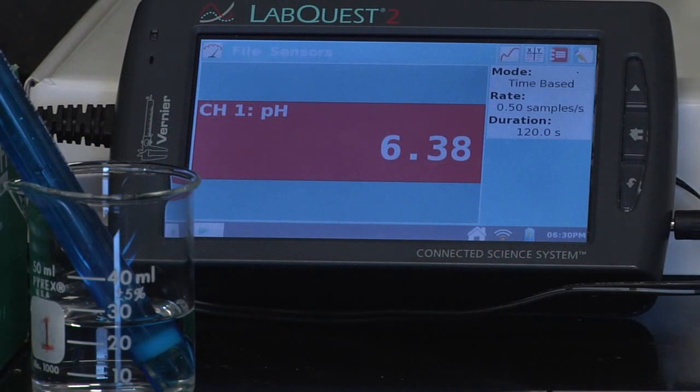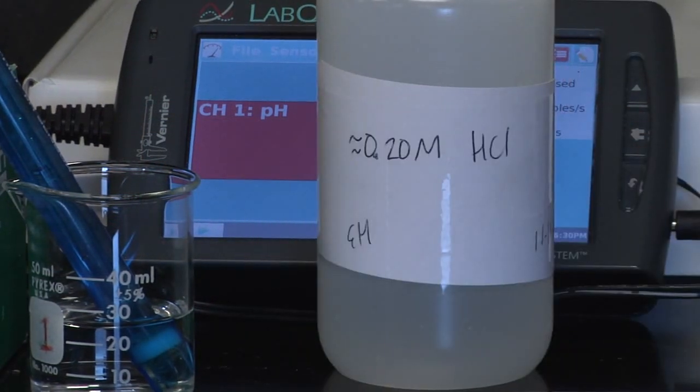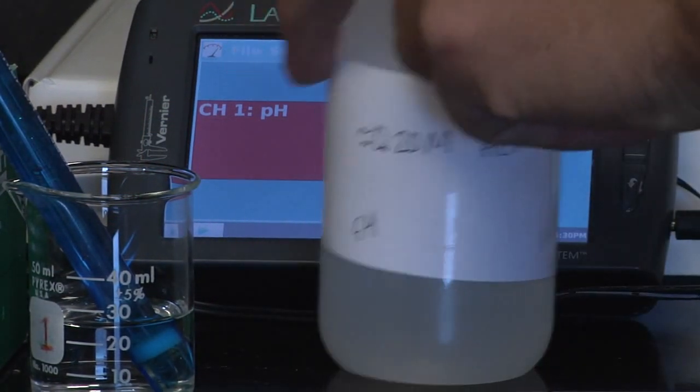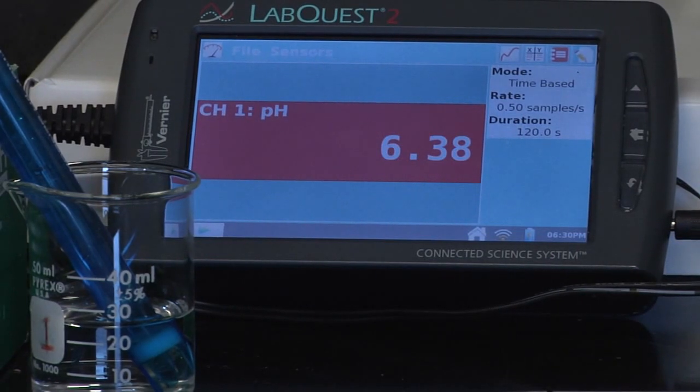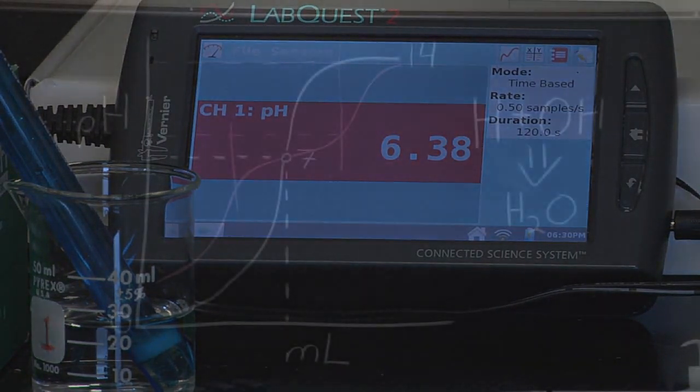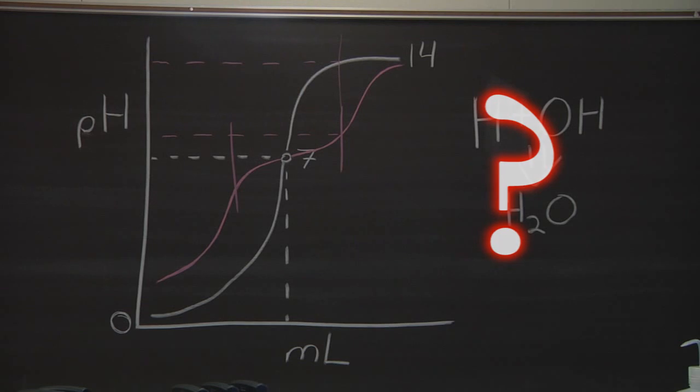So now we're going to take our 0.2 molar hydrochloric acid and add a couple drops of it to our solution. Now what do we expect to happen according to our graph?